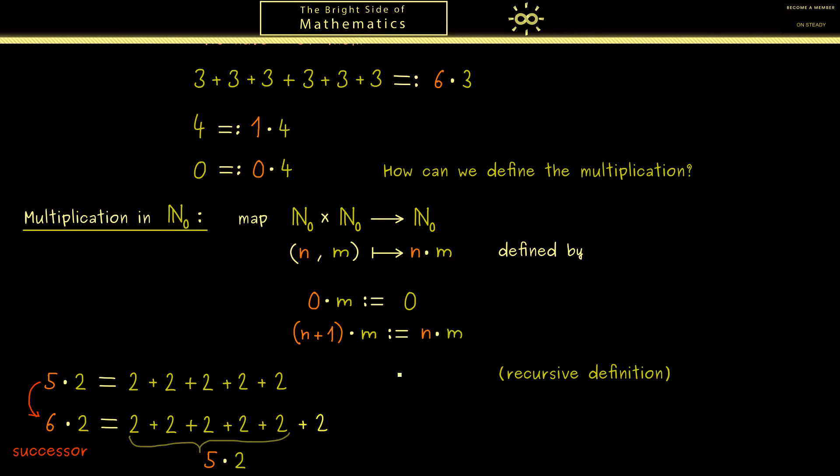Therefore in the general definition we would write: take n times m and add another m. And since we want to be completely precise we set parentheses here. Certainly you already know that we will just agree to say that the dot binds closer than the plus sign, and then we can just omit the parentheses. This makes everything easier to read.